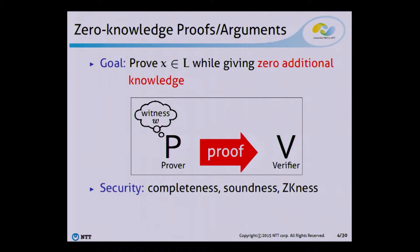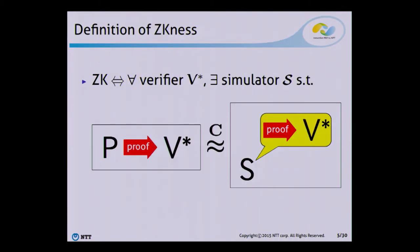As everyone knows, a zero-knowledge protocol is a two-party protocol between a prover and verifier in which the prover proves the correctness of a statement without giving any additional knowledge to the verifier. And this zero-knowledge property is formalized by using a simulation paradigm. A protocol is said to be zero-knowledge if for any verifier there is a simulator such that it can output a simulated view of the verifier that is computationally indistinguishable from the real view of the verifier.